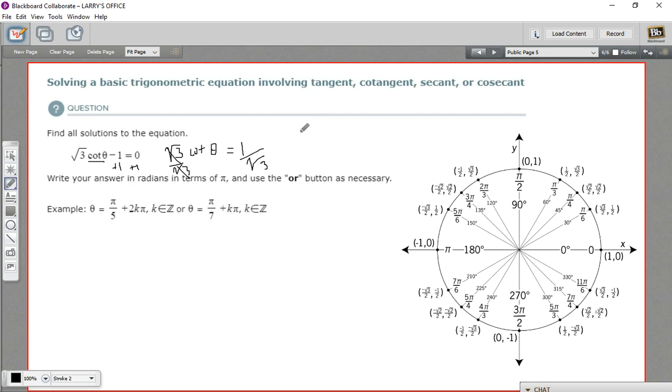Now remember, the cotangent is the cosine over the sine. So that's the x value over the y value here. And we need to find the spot where that comes out to 1 over the square root of 3. So there's a little bit of math to do there.